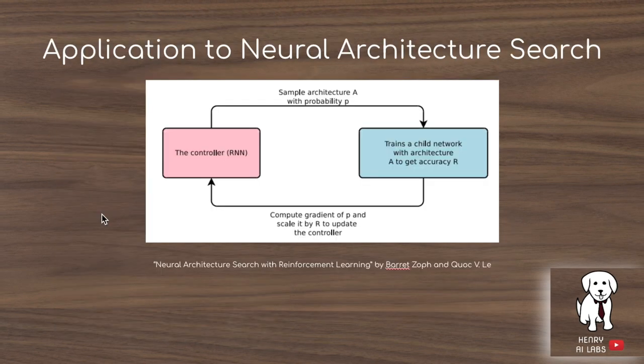The generative teaching network framework seems very useful for training neural networks, especially as a data augmentation algorithm. Particularly, the authors focus on neural architecture search and show how this can be applied to reduce the bottleneck of training the child network.